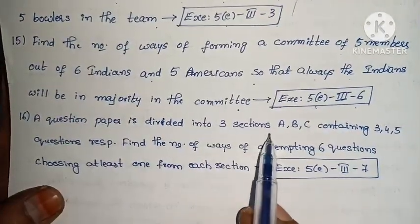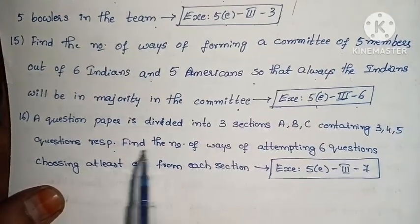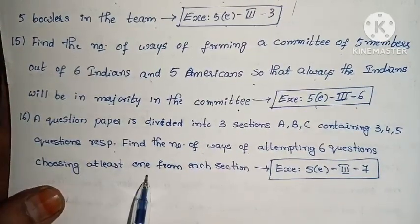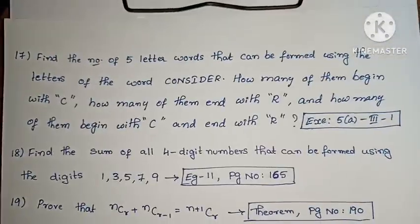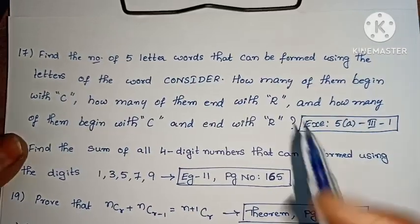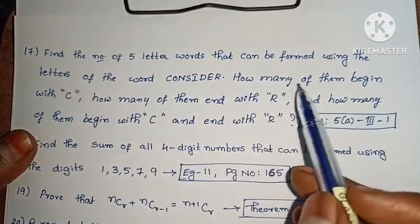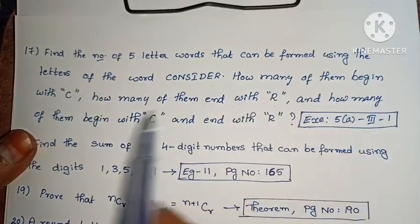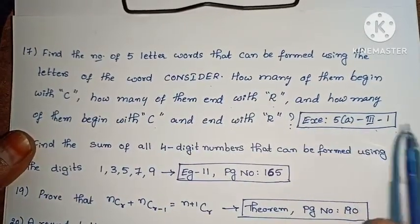Next: an exam paper is divided into 3 sections A, B, C containing 3, 4, 5 questions respectively. Find the number of ways of attempting 6 questions, choosing at least one from each section (Exercise 5, Roman III, seventh one). Next: find the number of 5-letter words that can be formed using the letters of the word CONSIDER; how many begin with C, how many end with R, and how many begin with C and end with R (Exercise 5, Roman III, first one).